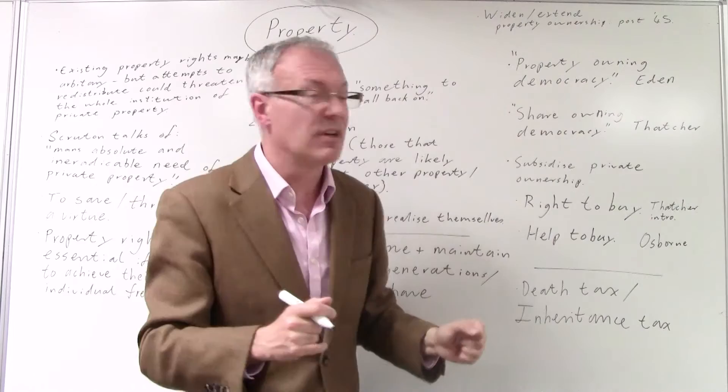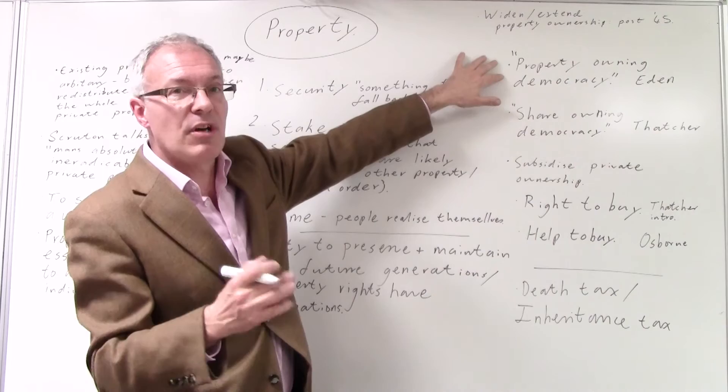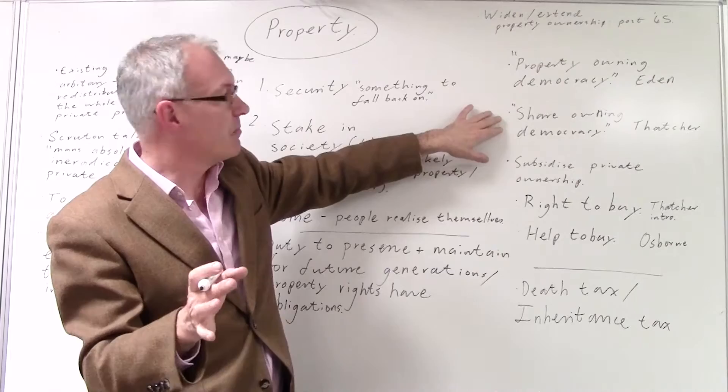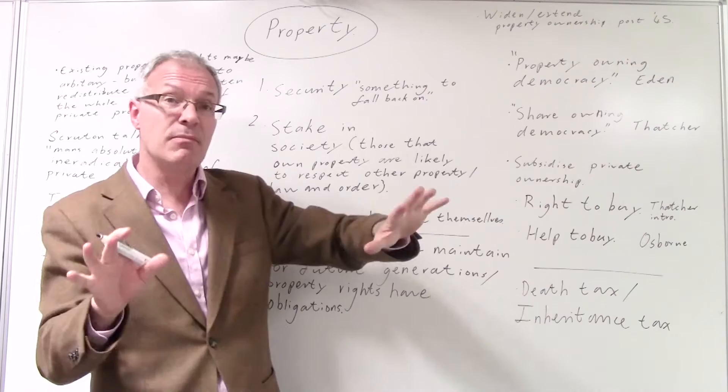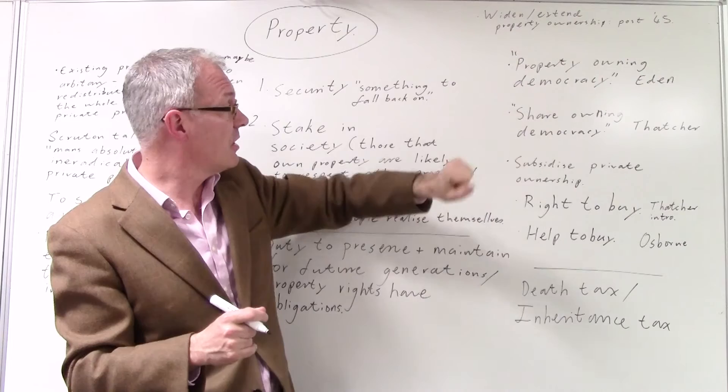However, Eden in the 50s wanted to create a property-owning democracy. Thatcher, of course, wanted to create a share-owning democracy, and Thatcher was rather pleased that there were more shareholders by the end of her reign, if we call it that, by 1990. There were about 9 million people that owned shares in the United Kingdom. That's more than there were trade unions by 1990.